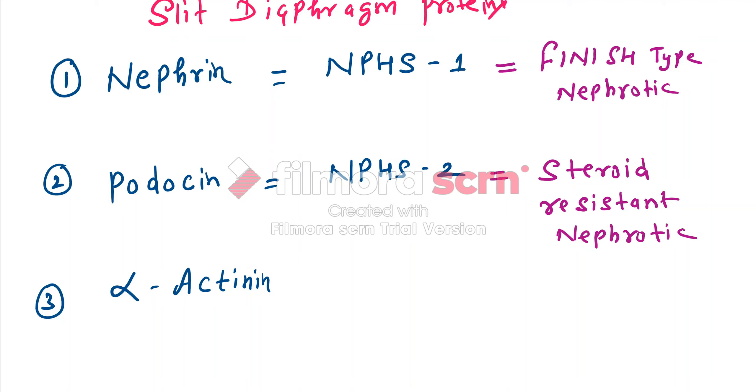If there is mutation in alpha-actinin protein, it will lead to congenital form of FSGS: Congenital Focal Segmental Glomerulosclerosis.